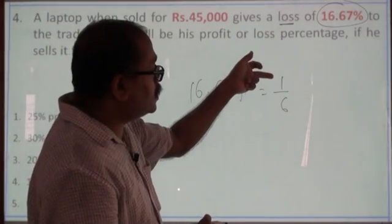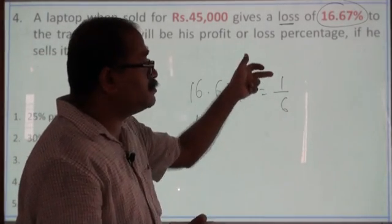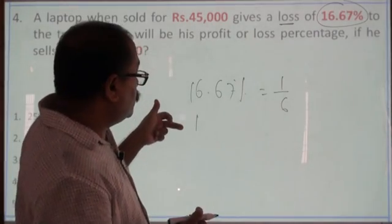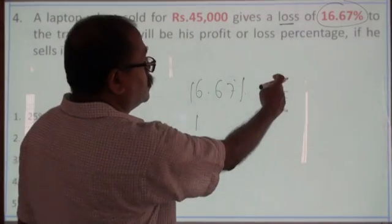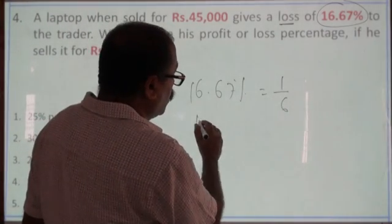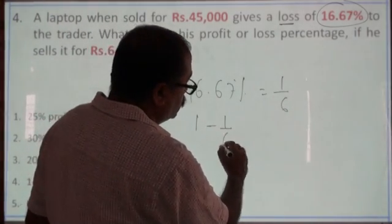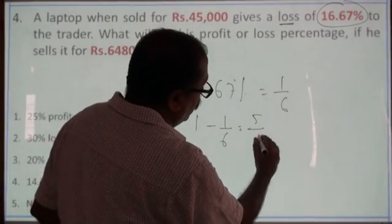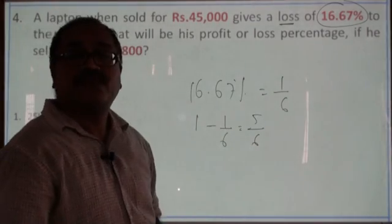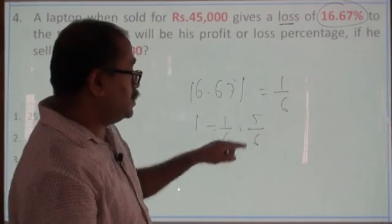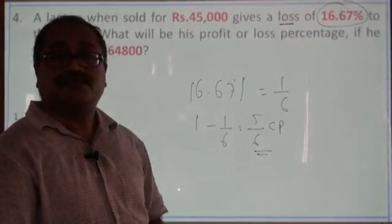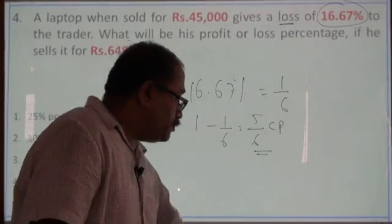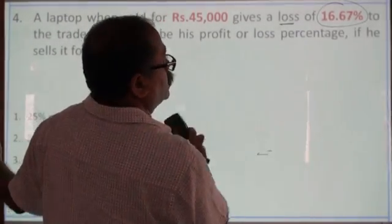whenever I take the profit or loss in terms of fraction, then cost price must be 1. So, let us see how much loss, 1 sixth loss. Cost price 1 minus 1 by 6 which is equal to 5 by 6. So, the selling price is 5 sixth of cost price. With this understanding, let us answer this question.